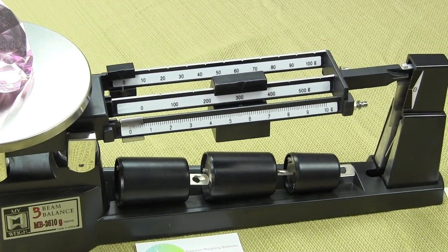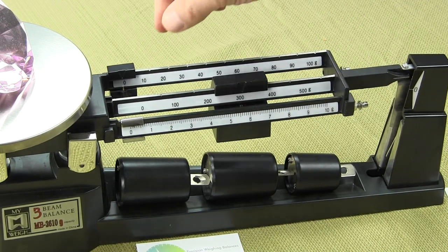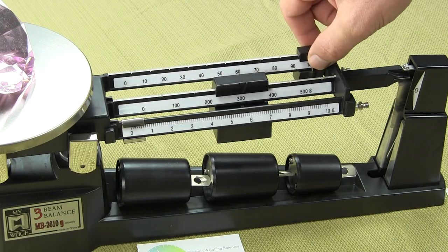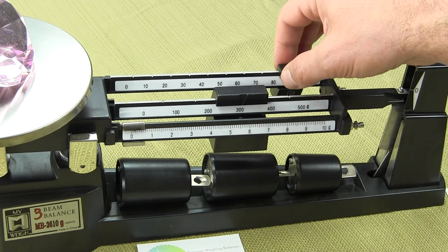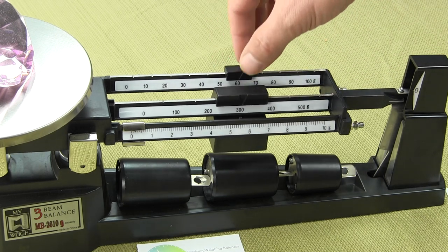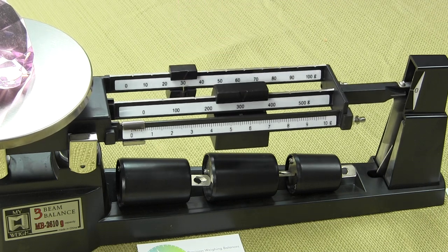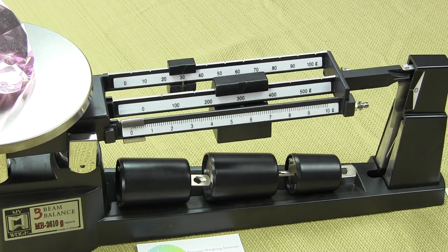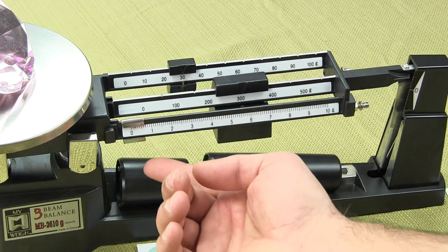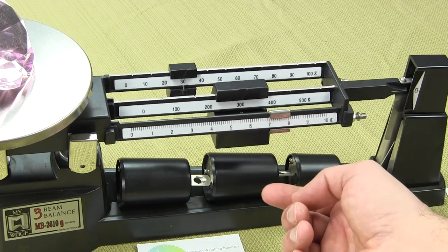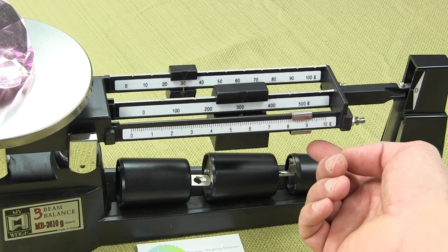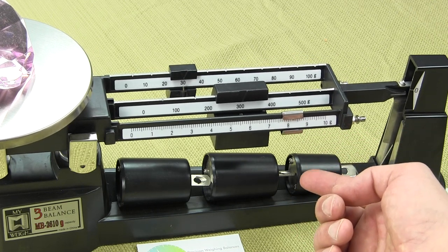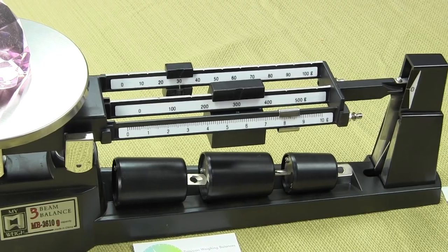Now we slide the 0 to 100 gram rider all the way across and you'll see it goes down. You basically want to start sliding it back until the beam goes up. Still down, still down, okay the beam is now up. So we want to go to the front beam and again you just want to slide until the beam starts to drop.